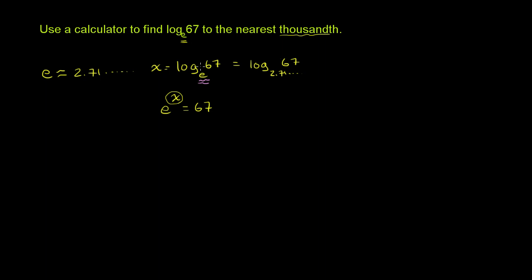So log base e of 67, another way of seeing that, the more typical way of seeing that, is the natural log. And I think this is ln, so maybe from French or something, log natural of 67. This is the same thing as log base e of 67. To what power do I have to raise e to to get 67? When you see this ln, it literally means log base e.